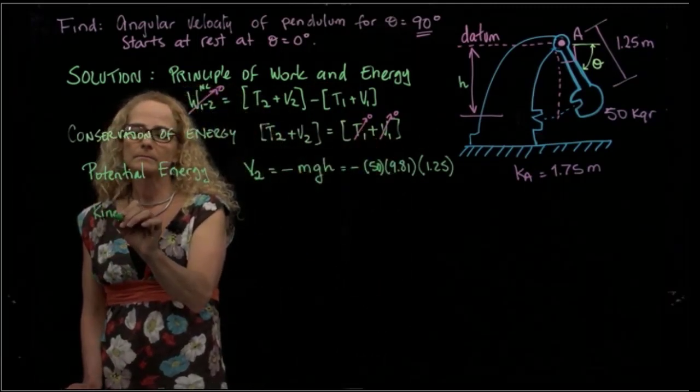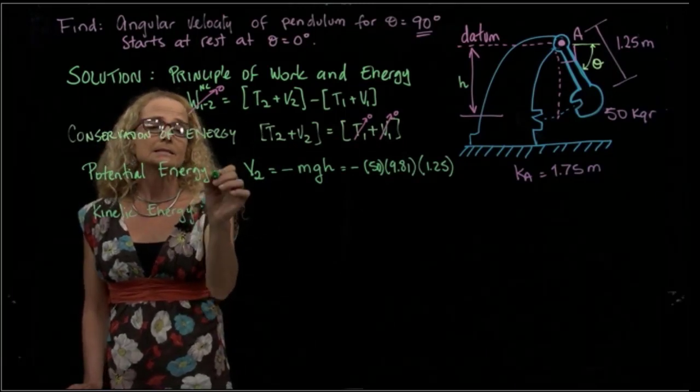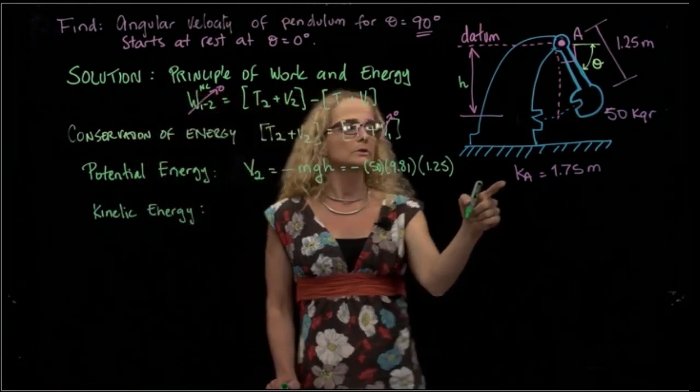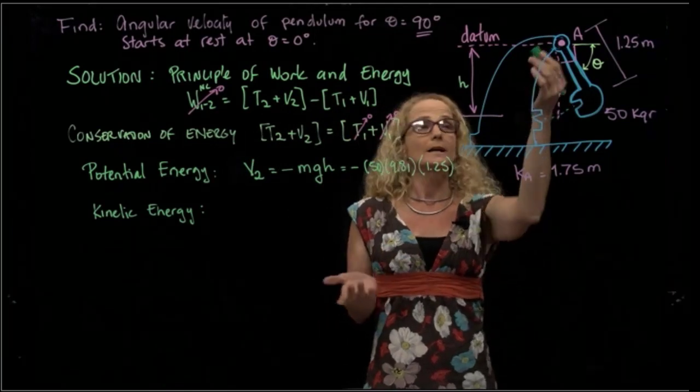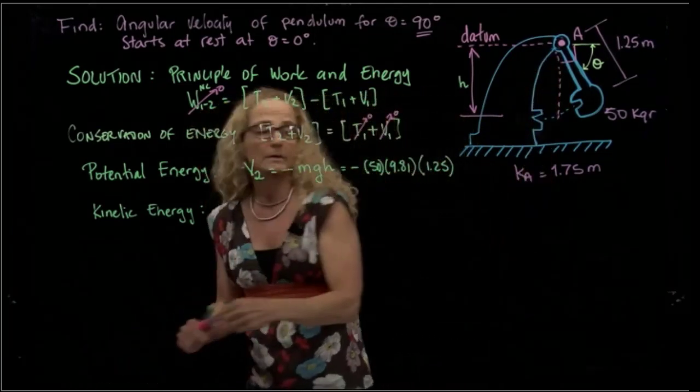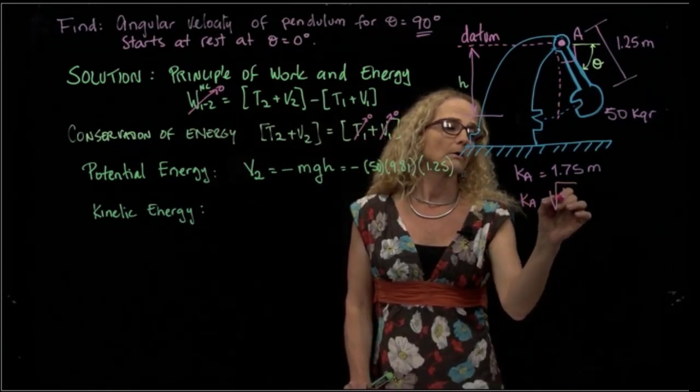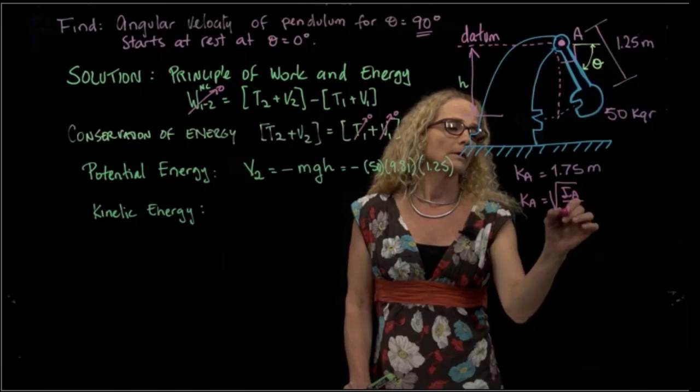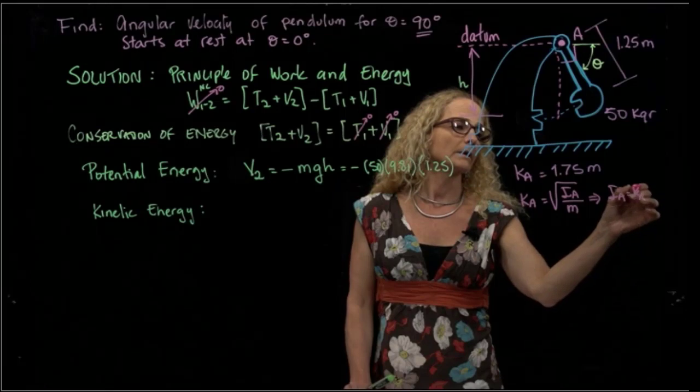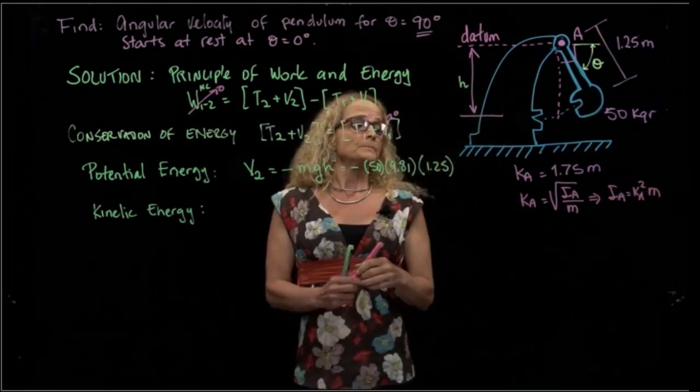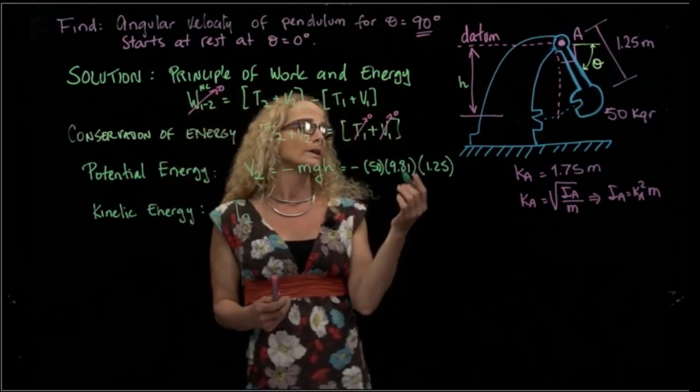And the kinetic energy, since we have the radius of gyration about point A from one axis perpendicular to the plane, we have to remember the definition of radius of gyration, which is the square root of the inertia over the mass. Therefore, we have that our inertia is that radius of gyration squared times mass.